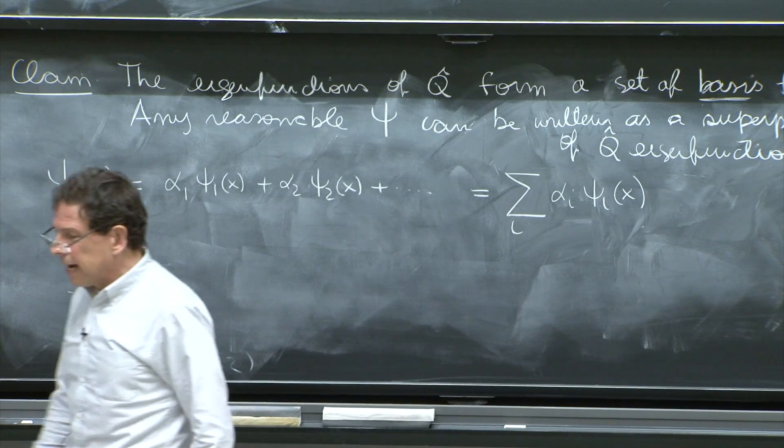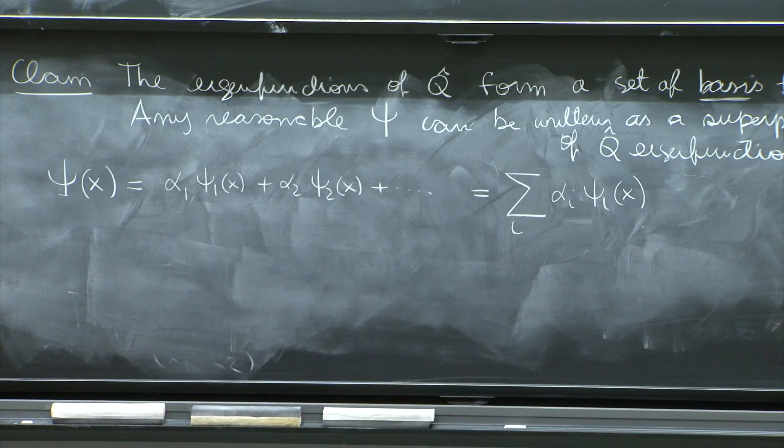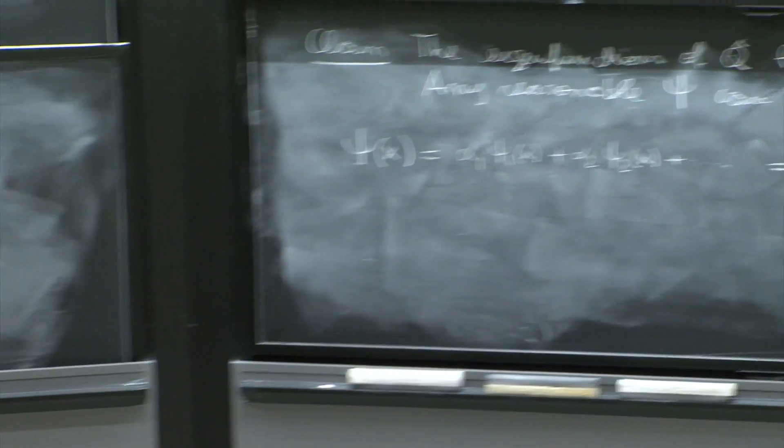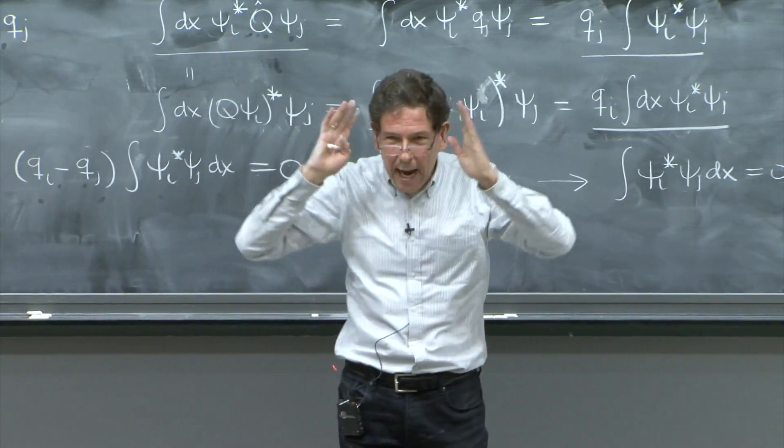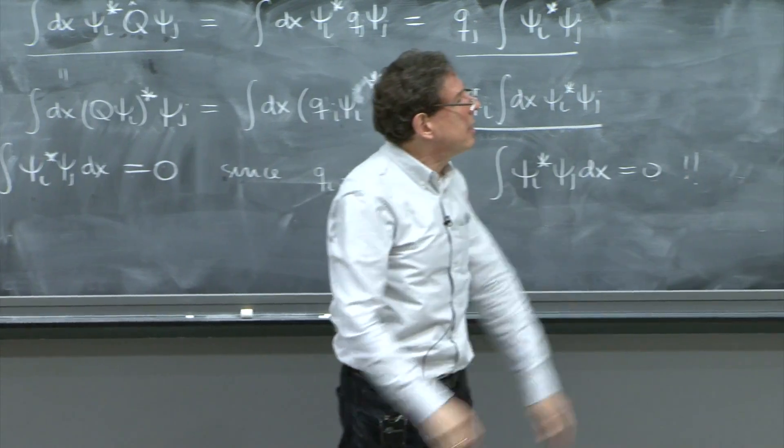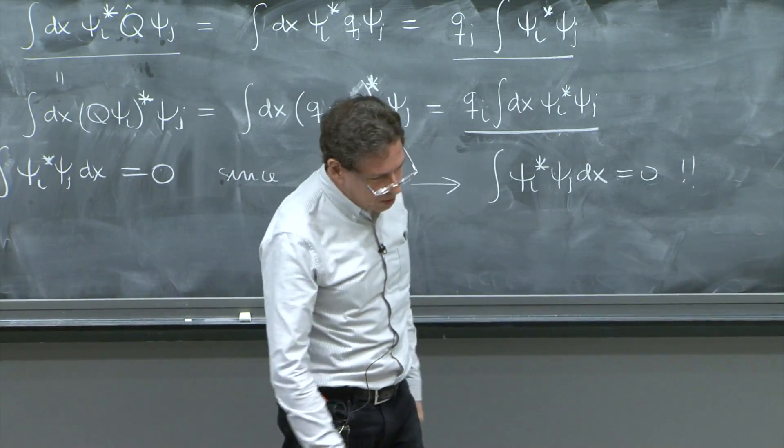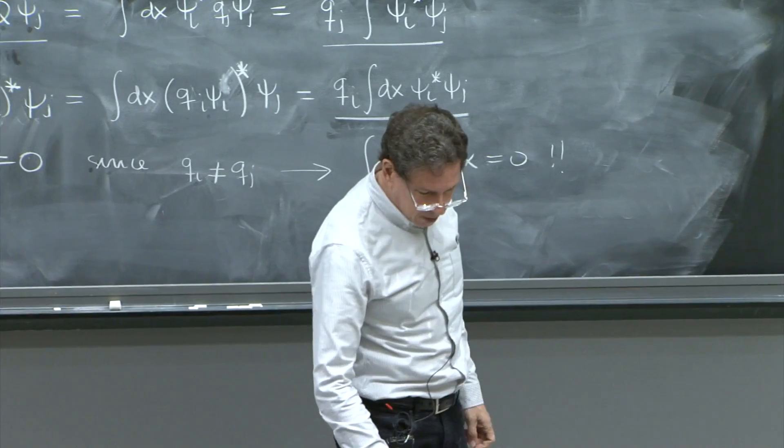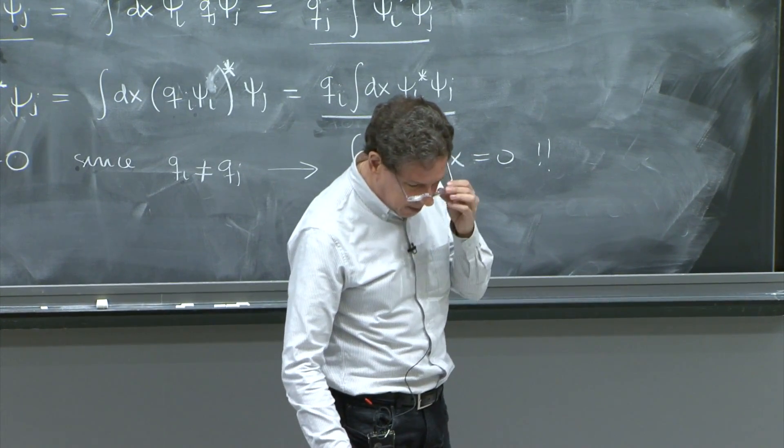So the idea is that those alpha i's exist and you can write them. So any wave function that you have, you can write it in a superposition of those eigenfunctions of the Hermitian operator.